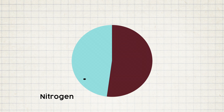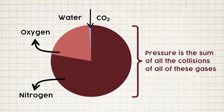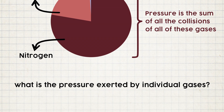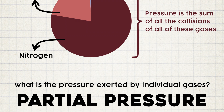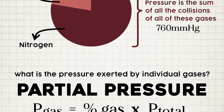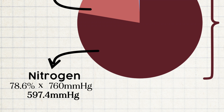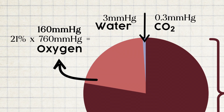The air we breathe is a mixture of different gases — mostly nitrogen and oxygen, but there's some water vapor and carbon dioxide in there too. When we measure pressure, we're measuring all of the collisions in that mixture at the same time. But to understand how gases get into the bloodstream, we need to know the pressure exerted by one gas at a time — this is called the partial pressure of a gas. We figure it out by multiplying the percentage of the gas in the mixture by the total pressure. Atmospheric pressure is 760 mmHg at sea level. Nitrogen is about 78.6% of air, giving it a partial pressure of 597.4 mmHg. Oxygen is 21% of air, so 21% of 760 comes out to 160 mmHg. Carbon dioxide at 400 parts per million has a partial pressure of 0.3 mmHg.